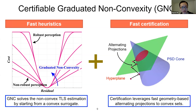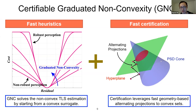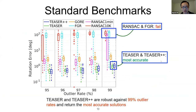Regarding certifiable robustness: by certifiable, we mean there is a way to tell whether the obtained solution is close enough to the optimum solution. With the GNC-TLS method, after solving for rotation quickly, we can leverage our knowledge of the SDP problem to give a certificate on how close the solution is to the global optimal solution, providing a sub-optimality gap on the closeness of the solution.